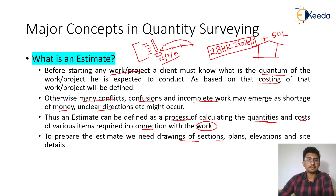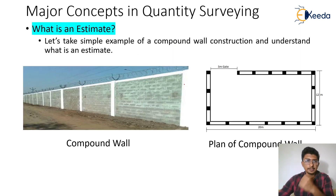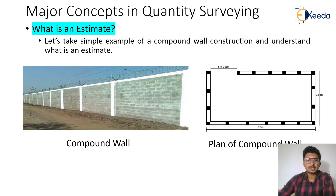An estimate is a document telling us about the quantities expected in a project and the costs related to them. To calculate this estimate we need drawings, sections, plans, elevations, and site details — these four are essential to understand the quantum of work. Now let's take a simple example to understand what an estimate is all about: constructing a compound wall around a house on a 20-meter by 12-meter area.